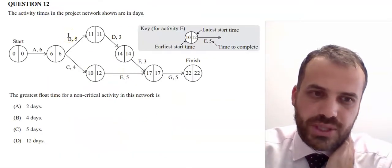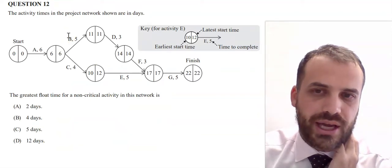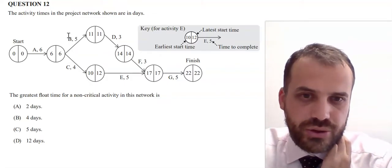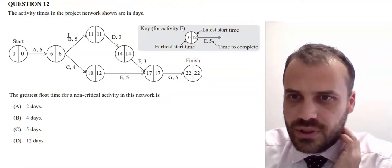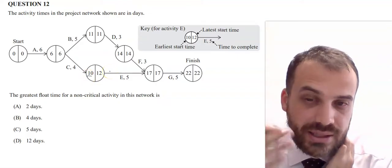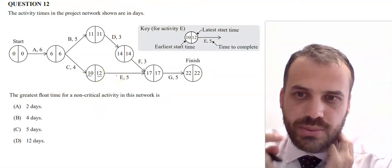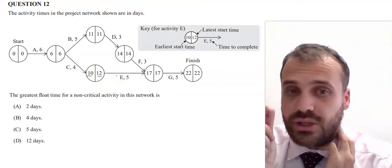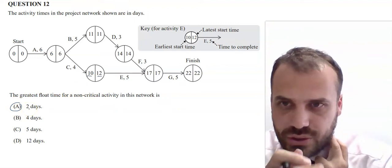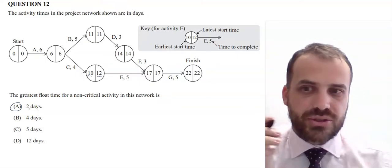Question twelve is an interpretation question. We need the greatest float time for a non-critical activity. Float time is the amount of time you can delay starting an activity. The earliest start time for the key activity is day 10, and the latest start time is day 12 — so the float time is 2 days. That is the only float time in this network. Answer: 2 days.